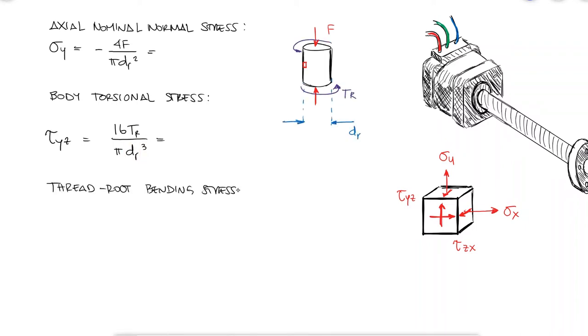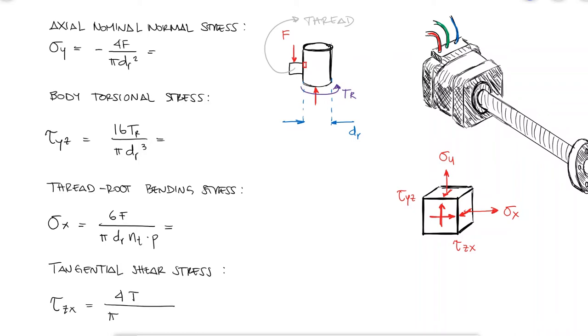We know that sigma x is the normal stress due to the bending of the threads, and that tau zx is the tangential shear stress that also depends on the input torque.